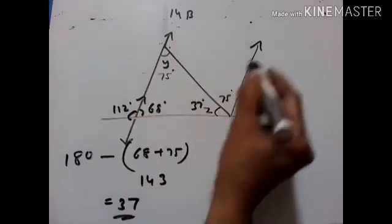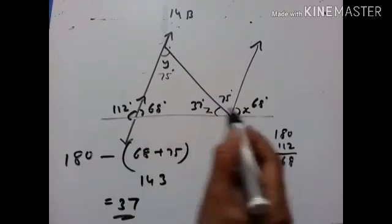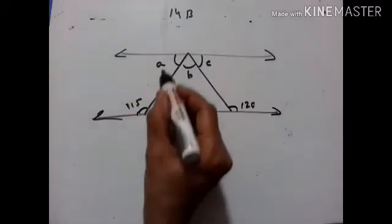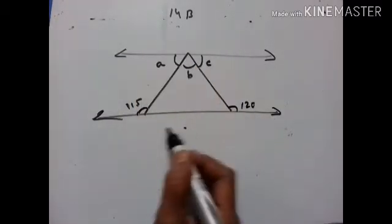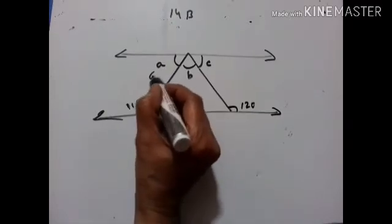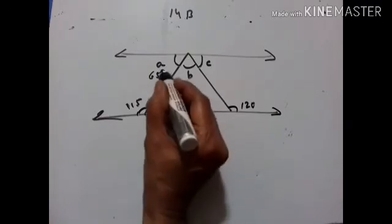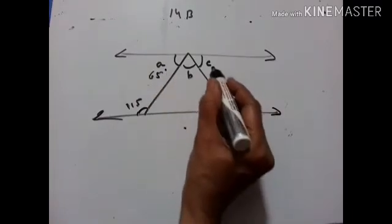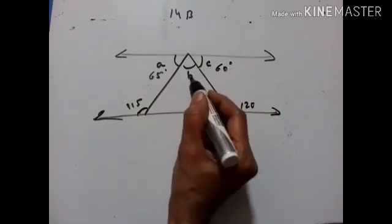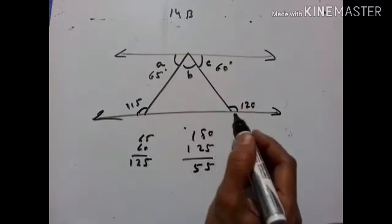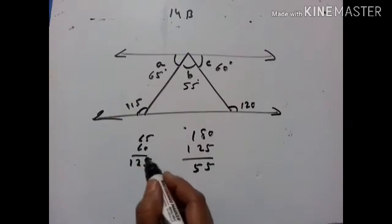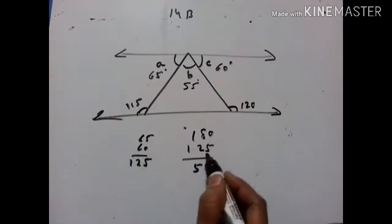Or we can say these two lines are parallel, therefore these two are corresponding angles, so this is 68. These two are co-interior angles because these two lines are parallel: 180 minus 150 equals 65 degrees. This is 120 — these two are co-interior angles, therefore C is equal to 60 degrees. B is equal to 180 minus (65 plus 60) equals 55 degrees.